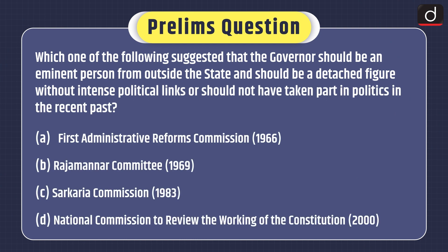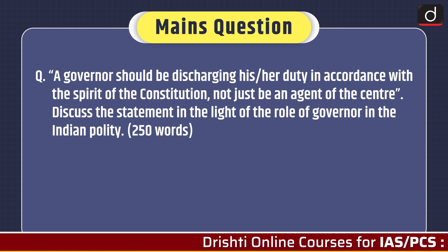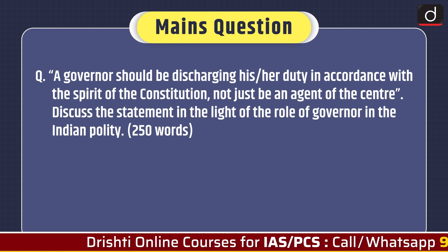Now it's time for practice questions. The prelims question: Which one of the following suggested that the governor should be an eminent person from outside the state and should be a detached figure without intense political links or should not have taken part in politics in the recent past? Options: Administrative Reforms Commission 1966, Rajmannar Committee 1969, Sarkaria Commission 1983, or National Commission to Review the Working of the Constitution 2000. You can send the answer in the comment section. The mains question: A governor should be discharging his or her duty in accordance with the spirit of the constitution, not just be an agent of the centre. Discuss the statement in the light of the role of governor in Indian polity.